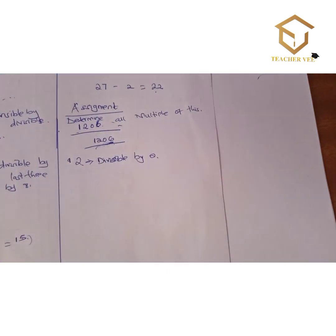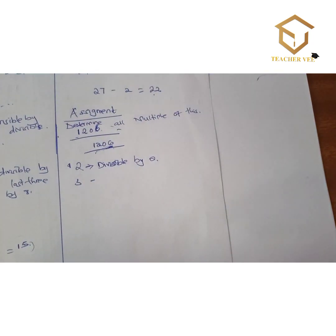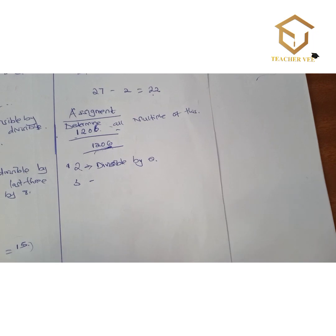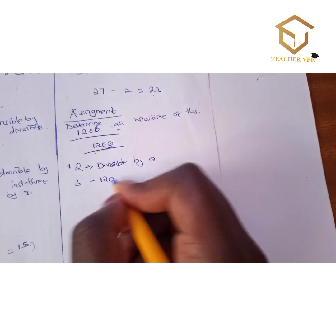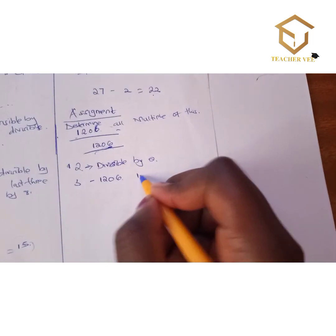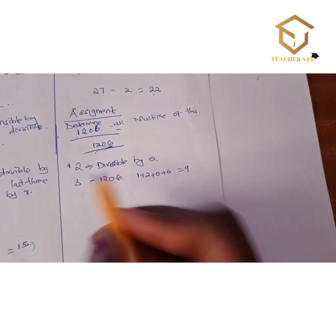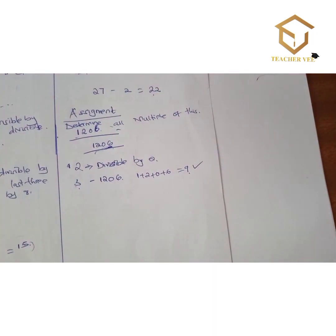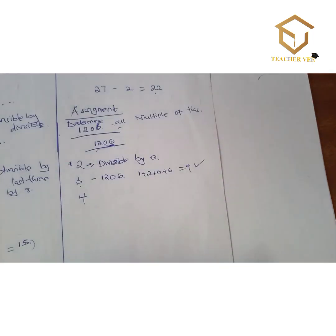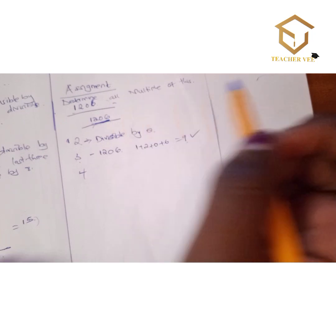The next check is divisibility by 3. We said that for a number to be divisible by 3, the sum of its digits must be divisible by 3. For 1206, when you add 1 + 2 + 0 + 6 you get 9. Since 3 × 3 = 9, this number is divisible by 3.